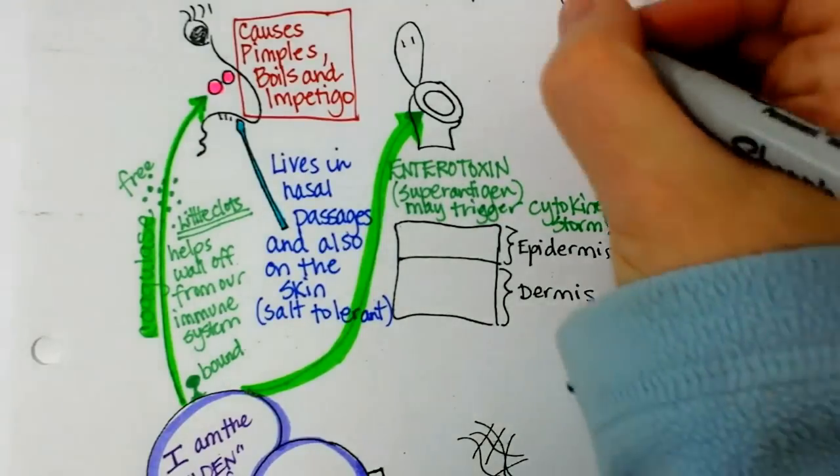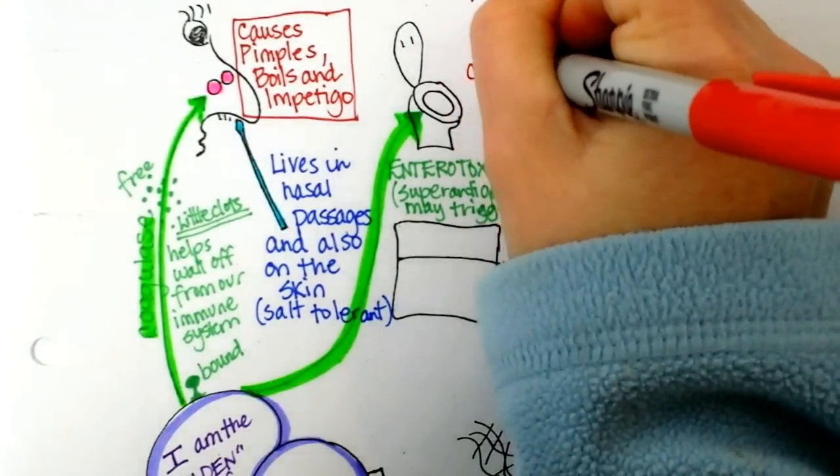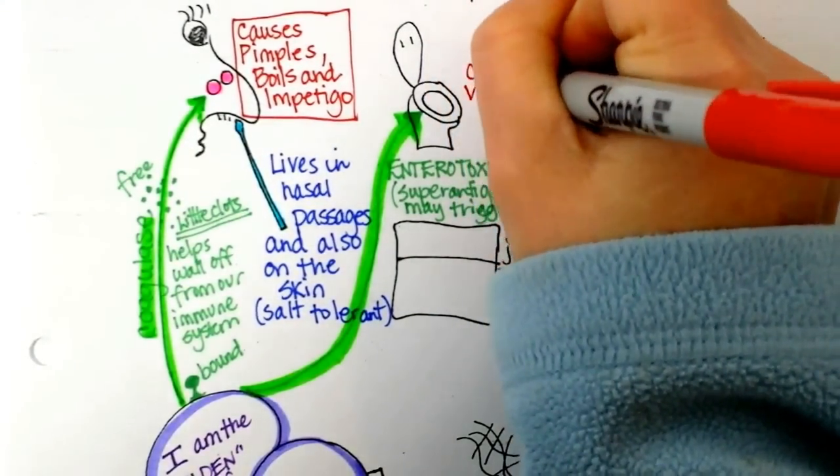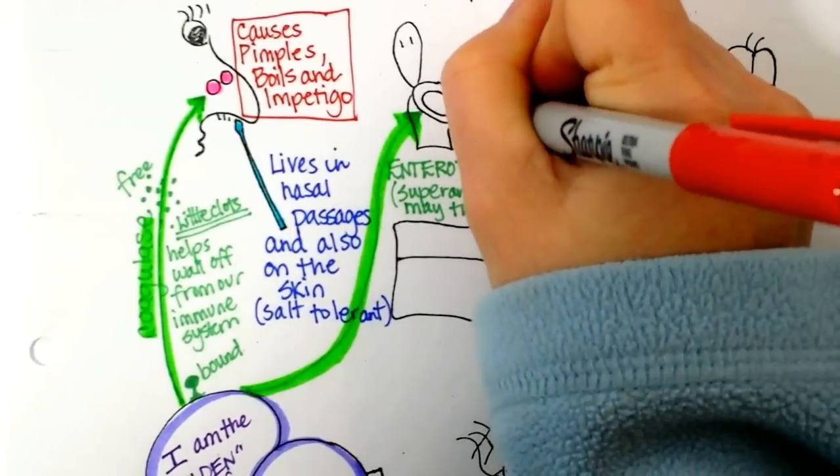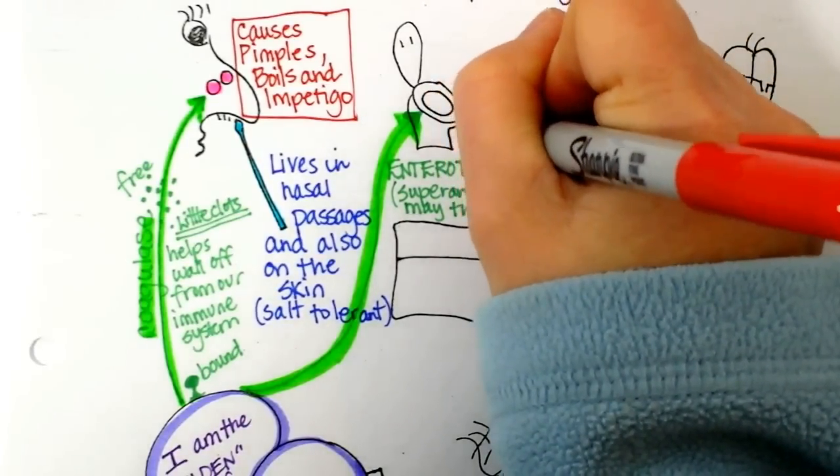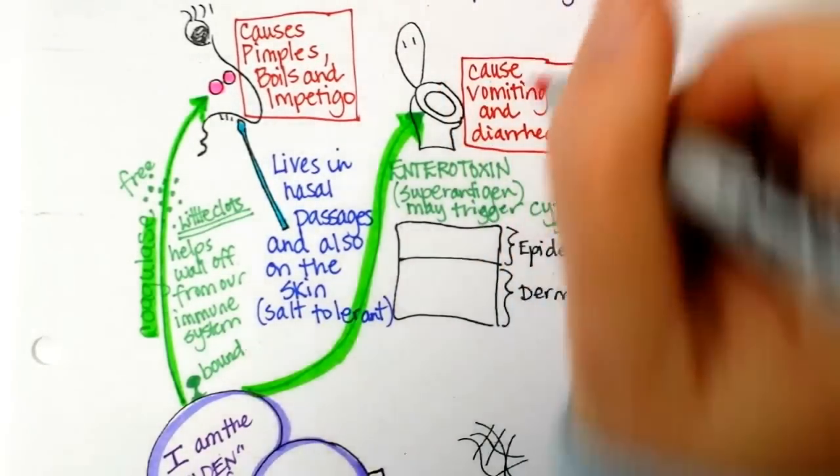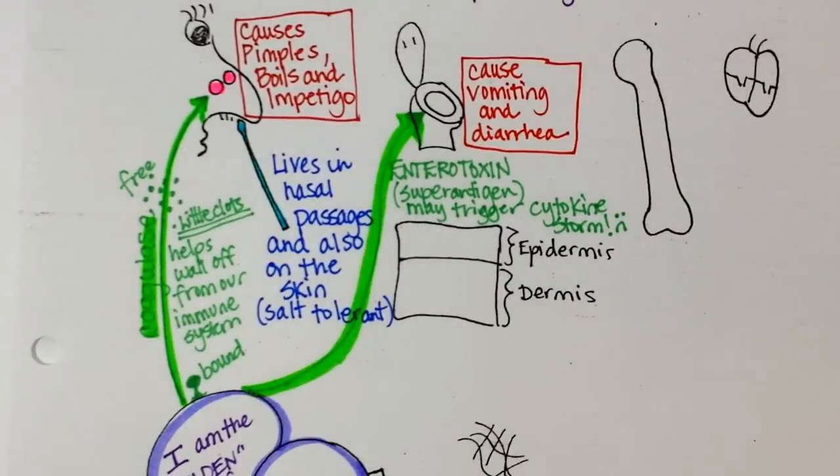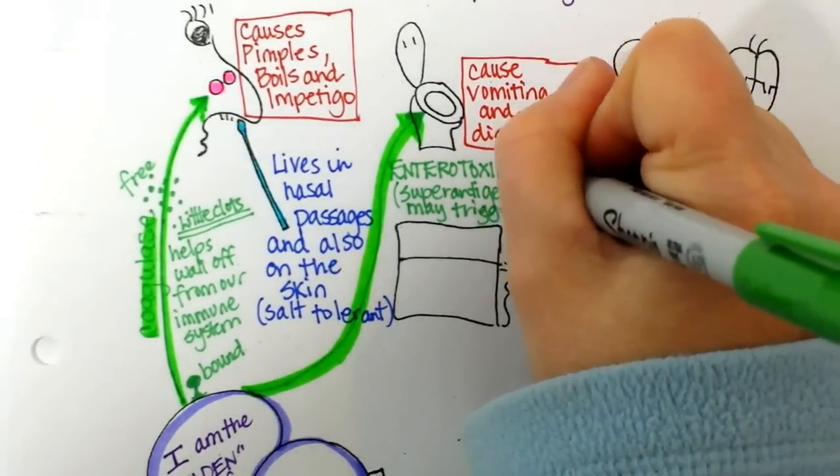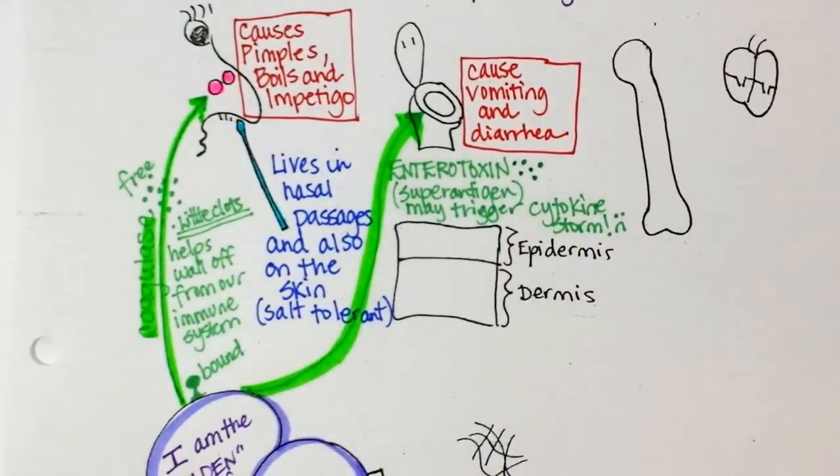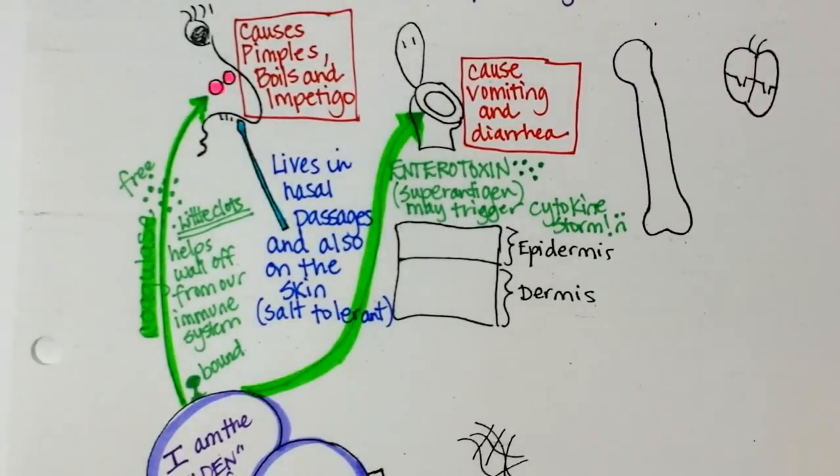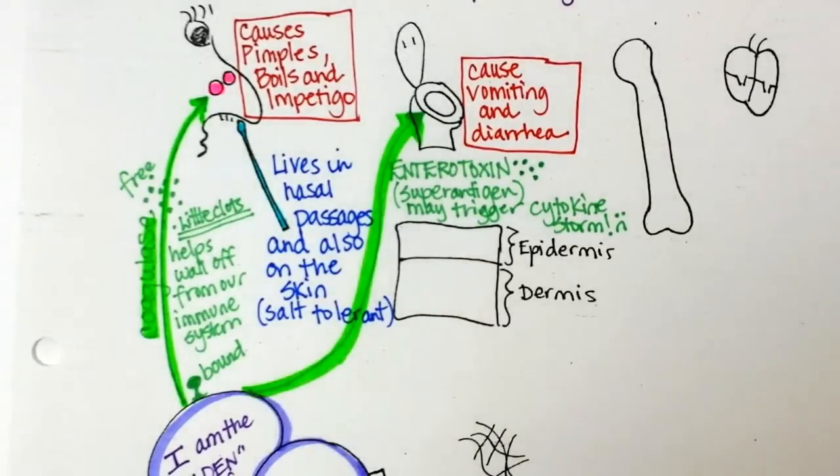So get your red pen again. This can cause vomiting and diarrhea. So and then let's put a few of these toxins right here.